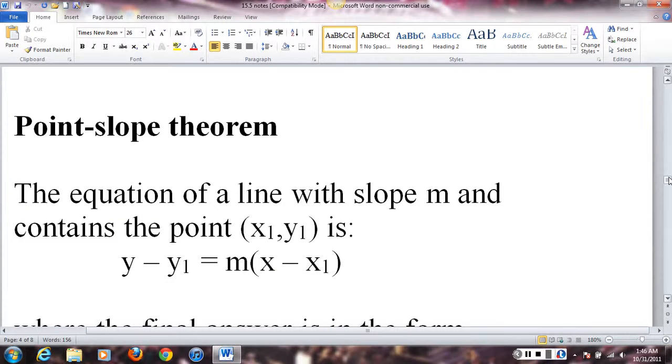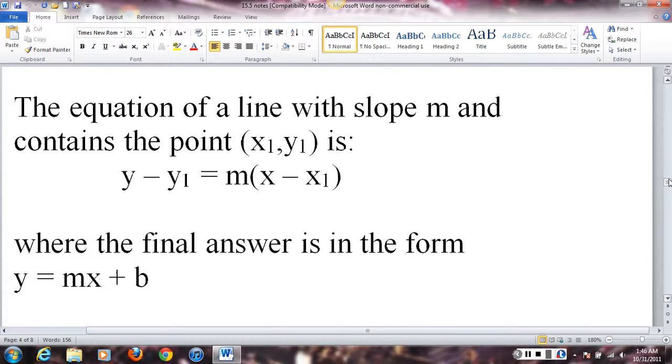The point-slope theorem, you may or may not remember from algebra, is the formula we use to find the equation of a line, if we're given a point and if we're given a slope. So, given the point x1 and y1 with the slope m, y minus y1 equals m times x minus x1. And in a question like this, when you're trying to find the equation of a line or a line of best fit, your final answer is always in the form y equals mx plus b, where m and b are going to be numbers, and x and y just stay x and y.